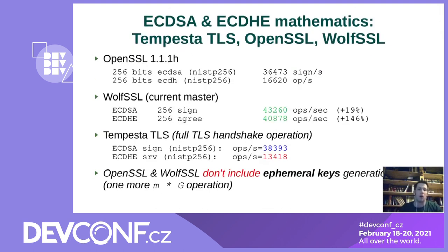All the libraries have built-in tools for cryptography performance measurements: OpenSSL Speed, WolfSSL Benchmark, and Tempesta TLS Benchmark tool. The tools are directly comparable between OpenSSL and WolfSSL. WolfSSL shows much better numbers than OpenSSL, mostly because it doesn't use as many memory allocations and copies. However, for Tempesta TLS a direct comparison isn't fair, because Tempesta TLS benchmarks the full operations used in a TLS handshake, including ephemeral key generation, which OpenSSL and WolfSSL don't do.